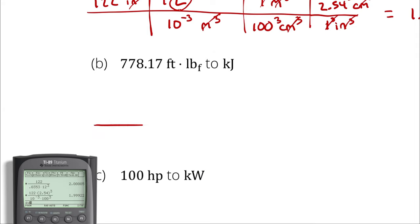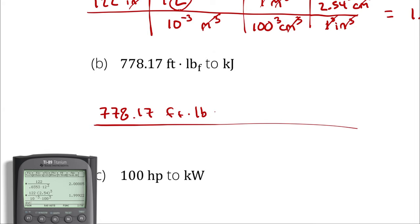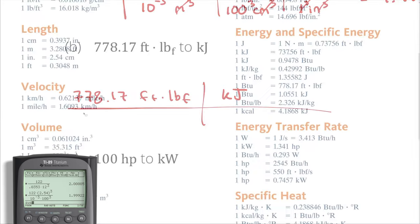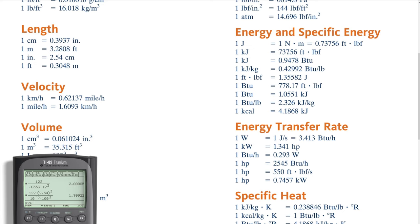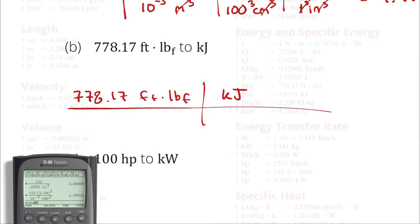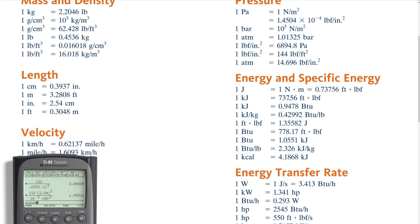The next is 778.17 feet pound force to kilojoules. Prerequisite horizontal line: 778.17 feet times pounds of force. I want to get to kilojoules. I'm going to write kilojoules as my destination and work backwards. I know that a kilojoule and feet pound force are both representations of energy — kilojoules is a unit of energy, pound force is a unit of force, feet is a unit of distance, and distance times force is a representation of energy, primarily work. So in the energy section, I can look up a conversion for kilojoules into feet times pounds of force.